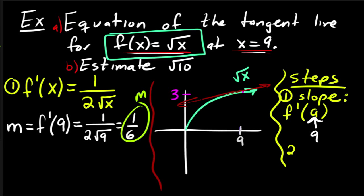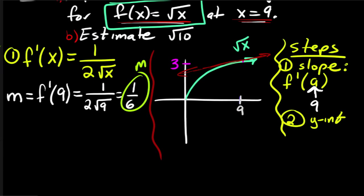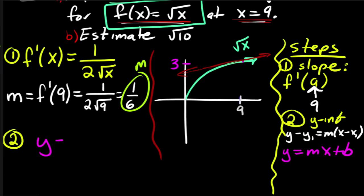Okay, now step two is going to be to find the y-intercept. Now there's a couple ways to do this, you can either use the equation y minus y1 equals m times x minus x1. Now, this isn't really my preferred way, my preferred way is actually to just use the general slope-intercept form of a line, y equals mx plus b.